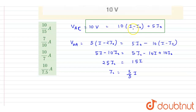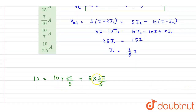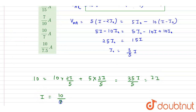From this we get i-naught equals (3/5)i. Substituting this into the loop equation: 10 = 10(i minus i-naught) = 10 times (2/5)i plus 5 times (3/5)i. That is 20 plus 15 over 5, which equals 35/5 = 7i. Therefore i = 10/7 A.